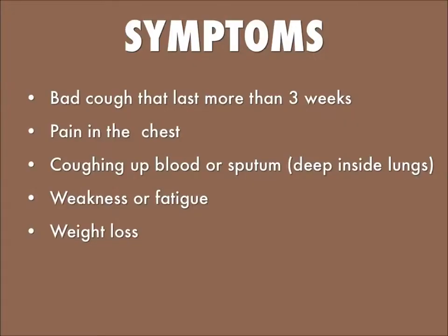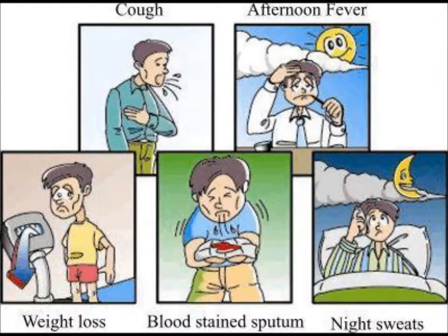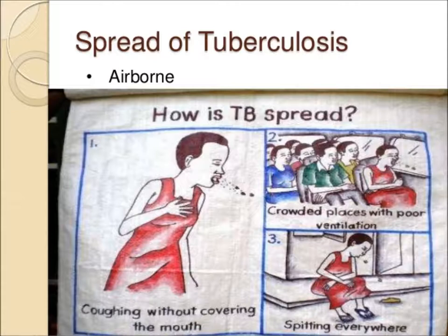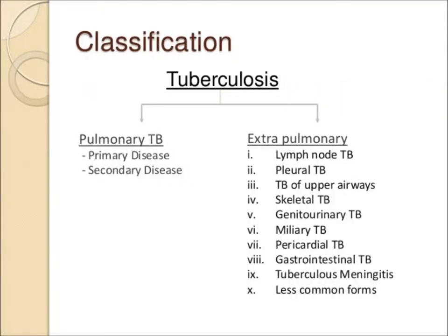The symptoms of tuberculosis are cough, pain in the chest, blood in the sputum, weakness, and weight loss. Patients can also have afternoon fever, night sweats. The spread of tuberculosis is airborne — by coughing without covering the mouth, spitting everywhere, and close crowding.